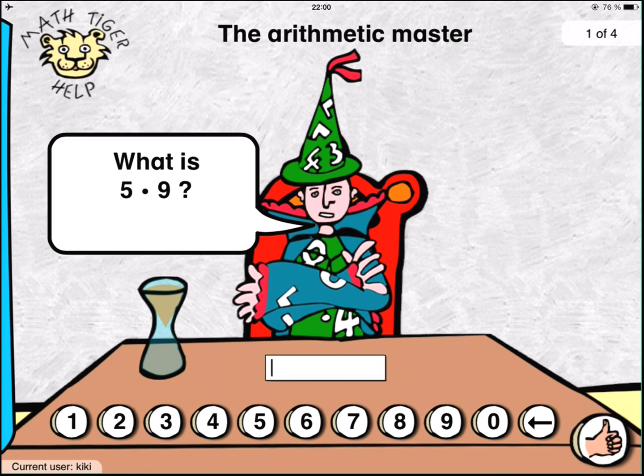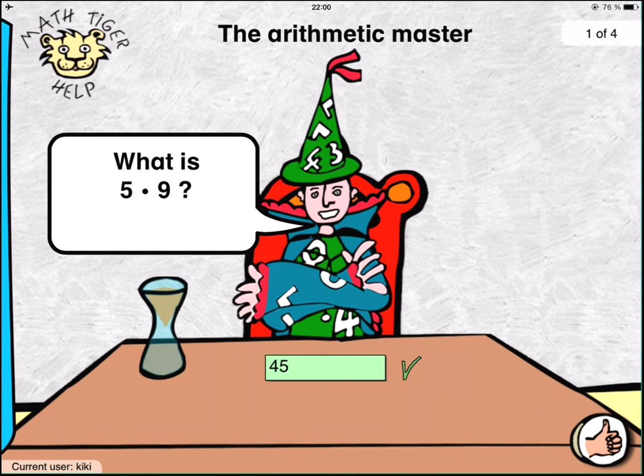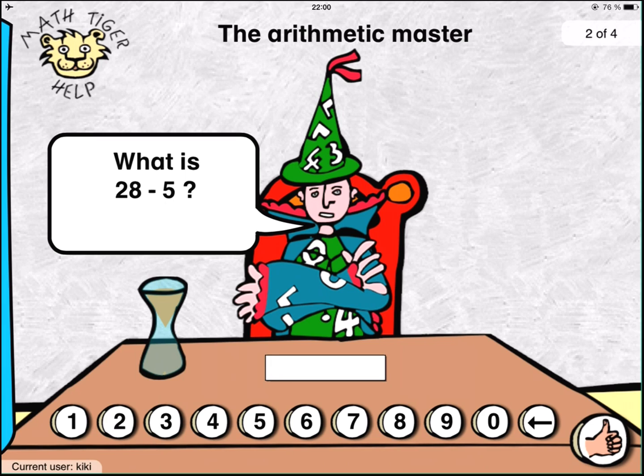What is five multiplied by nine? What is twenty-eight minus five?